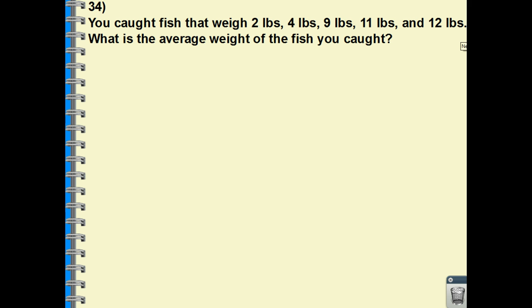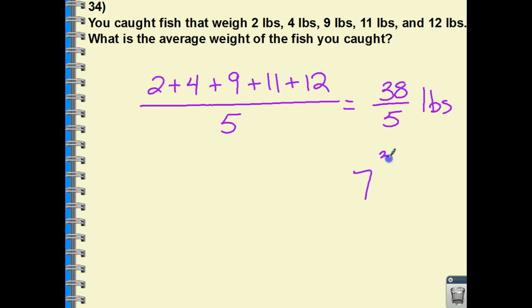Next one, we're looking for average. So if I'm taking the average of the weight of these fish that we caught, I'm going to add up all of the pounds and divide it by the number of inputs that we had. So I had an input of 2, 4, 9, 11, and 12. Finding the average, we're going to find the mean here. We're going to add them all up and divide by 5 different inputs. We have 12, 23, 32, 36, 38 fifths. And what do they want? The average weight. So 38 fifths pounds of fish. And if you wanted to turn it into a mixed number, 7 and 3 fifths pounds.